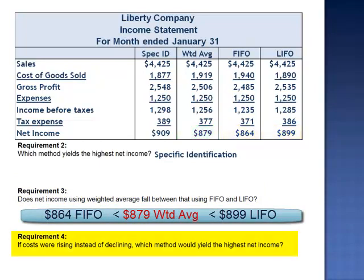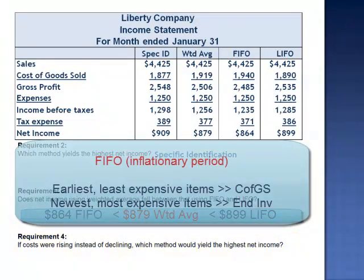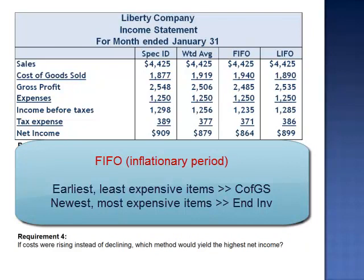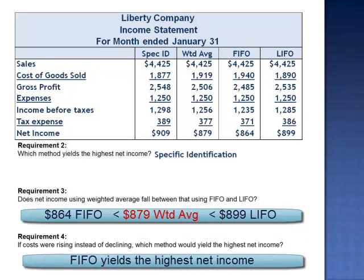Requirement 4: if costs were rising instead of declining, which method would yield the highest net income? In a period of increasing prices, cost of goods sold is lowest using FIFO, as the oldest, most inexpensive items are expensed first. Having the lowest expense will generate the highest net income, so in a period of rising prices, FIFO would yield the highest net income.